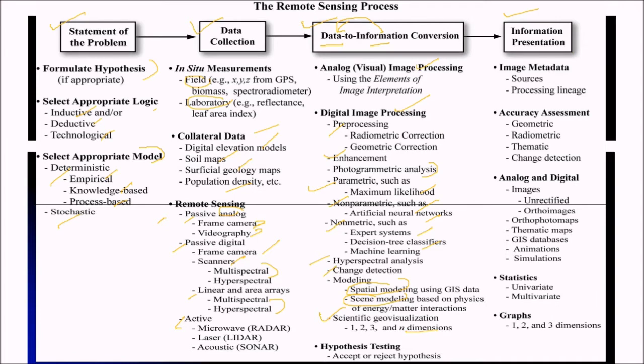Then the information presentation, that is image metadata. You can present the accuracy assessment. You can refer to the data or information with respect to the geometric, radiometric, thematic and change detection. The presentation can be analog or digital. It can be in the form of images, unrectified or ortho images, ortho maps, thematic maps, GIS database, animations and simulations.